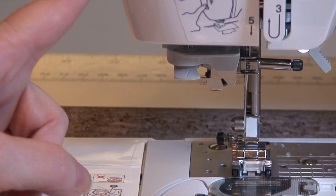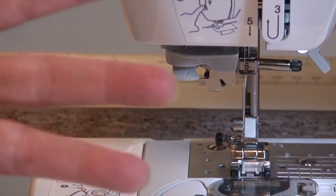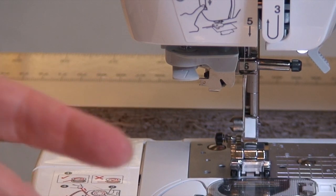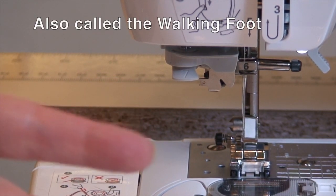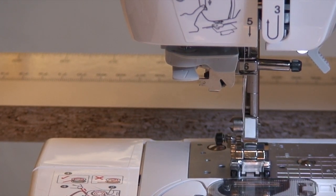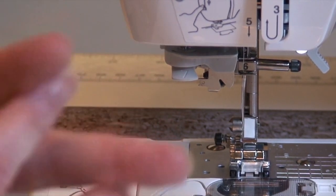Now, sometimes the needle threader will not work, and that would be like the twin needle, the wing needle, and possibly the even feed foot. So if you have any of those things, you'll probably have to thread it the old-fashioned way just by poking it through the needle. And that's how you do it.